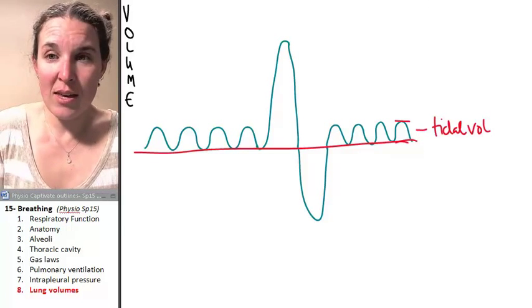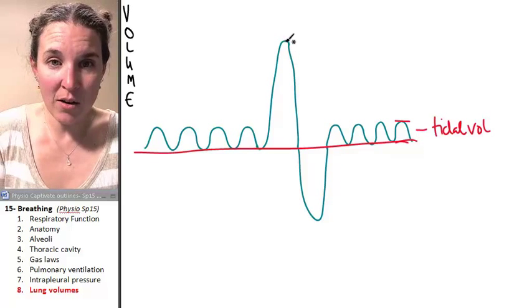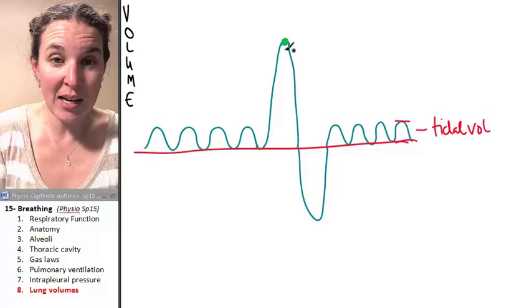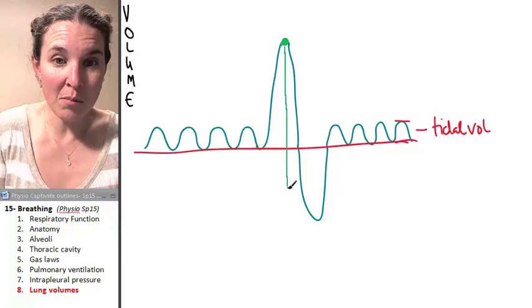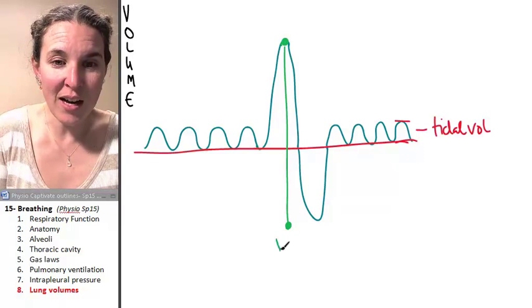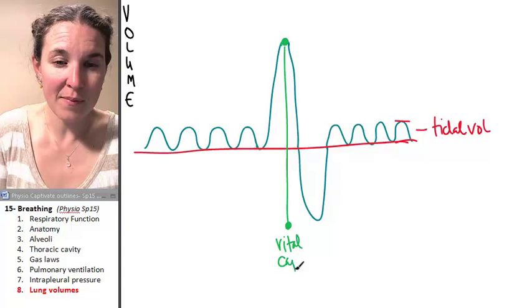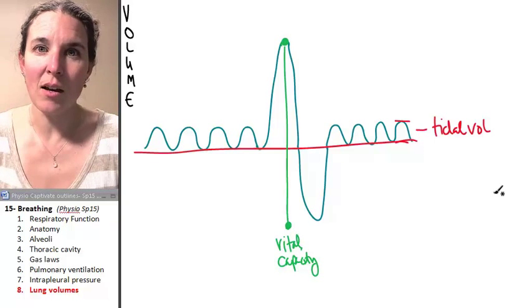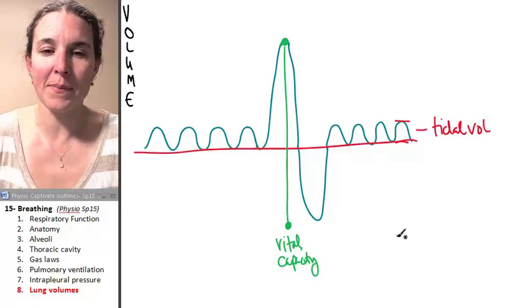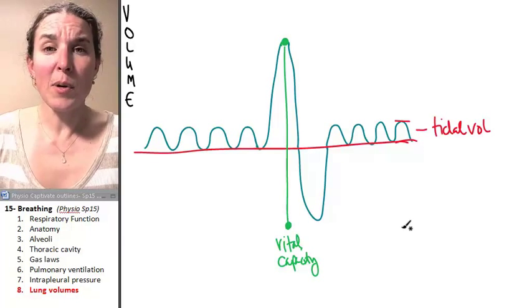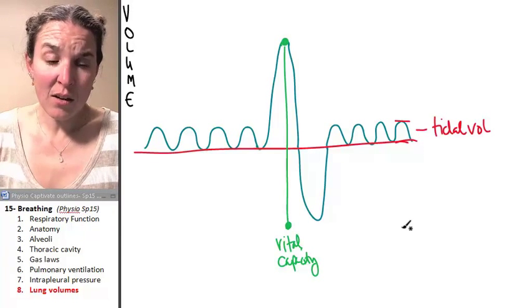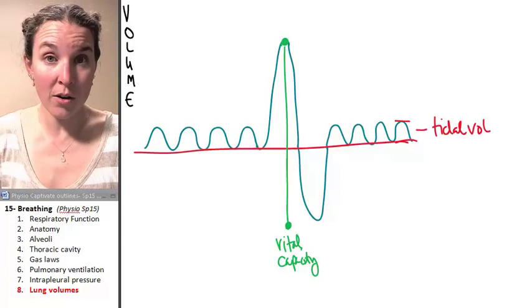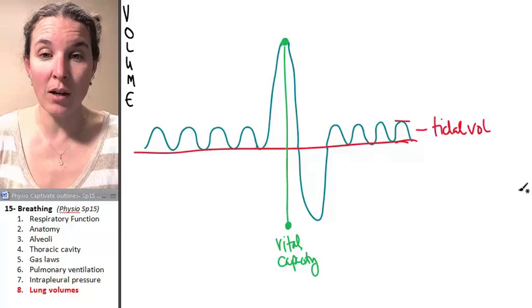Now, this entire space right here from the top of your biggest inhale to the bottom of your biggest exhale, that's your vital capacity. We're going to measure all these things in lab using iWorks. The bigger your vital capacity, the more air you're able to move through your lungs.